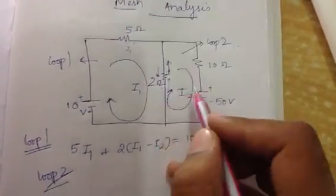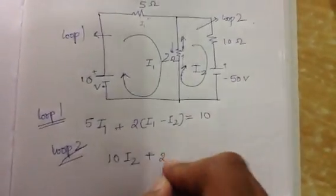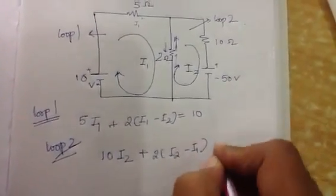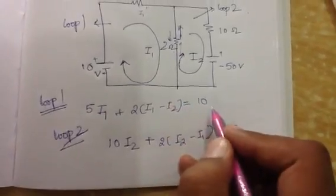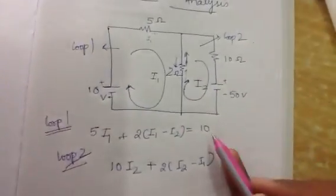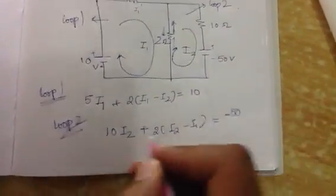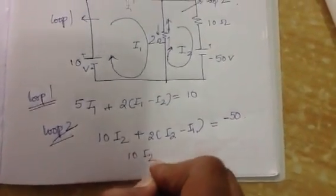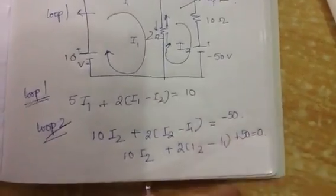For loop 2, we write the equations: 10I2 plus 2(I2 minus I1). Now, the current is coming out of the positive terminal, so by convention if the current comes out of the positive and into the negative, we take it as minus 50. So this gives us: 10I2 plus 2(I2 minus I1) plus 50 equals 0.